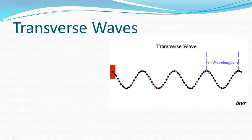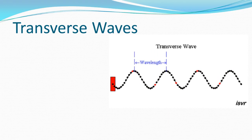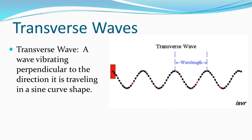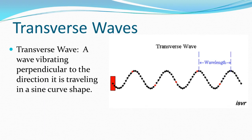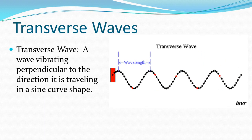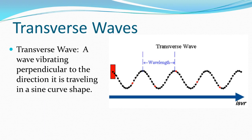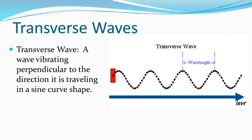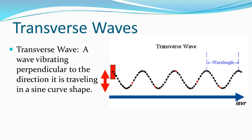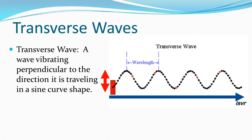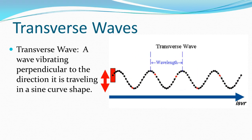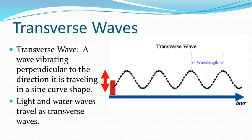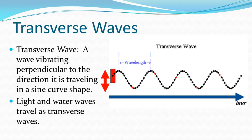There are a couple of common types of waves. The first is a transverse wave — a wave that vibrates perpendicular to the direction it's traveling, in a sine curve shape. The wave moves to the right, but the direction it oscillates is up and down, making a 90-degree angle with the vector for its direction. Light and water waves travel as transverse waves.